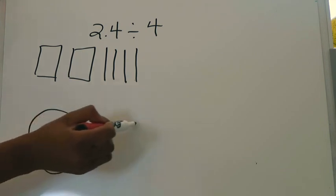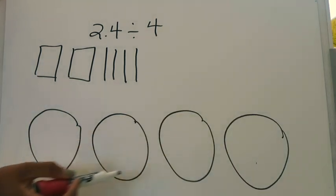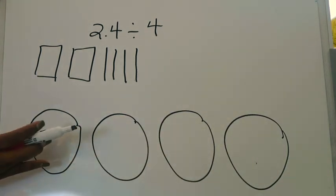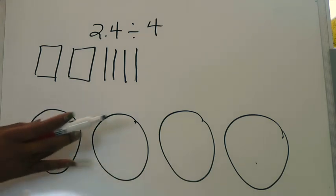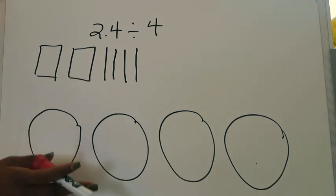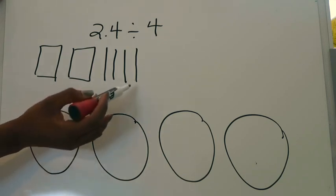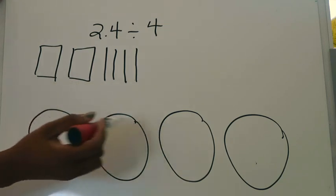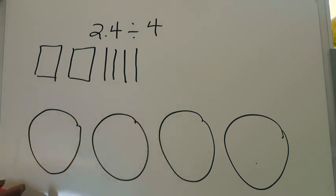So this is going to be group one, group two, group three, and group four. Sometimes I refer to these as groups, plates, or receptacles — but these are just the four groups based on the fact that your divisor was the number four. Once you've created space for each of your four groups, you want to start taking your dividend and equally placing pieces into each of these spaces.